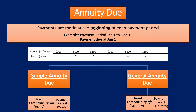Here's a quick recap of annuity due from our types of annuity video — you can check that out in the description. Annuity due is when the payments are made at the beginning of each payment period. For example, if you're investing $100 for the next six years and the payment period runs from January 1st to December 31st, payment would be due on January 1st of each year, at the beginning of the period.